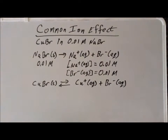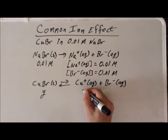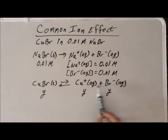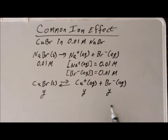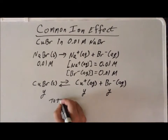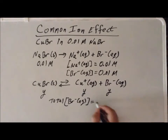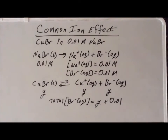We'll use the letter Y as a variable. For every Y molecules of cuprous bromide that break up, we get Y copper plus ions and Y bromide ions. But we also know that we have 0.01 molar bromide ion from the pre-existing solution. So the total bromide concentration is going to be Y — from the breaking up of the cuprous bromide — plus 0.01 from the pre-existing sodium bromide solution.